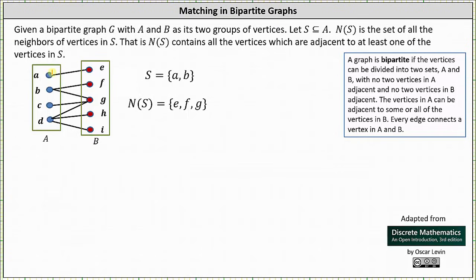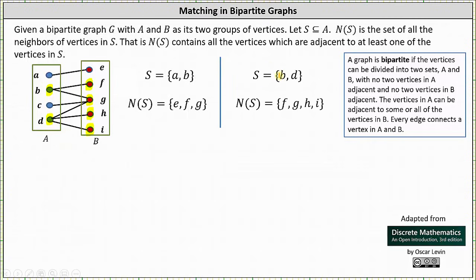As a second example, let's let S be the set of vertices b and d. Notice b is adjacent to f and g, and d is adjacent to g, h, and i. This indicates if S is the set of vertices b and d, then N(S), the set of neighbors of S, is the set of vertices f, g, h, and i.